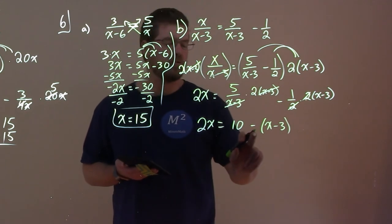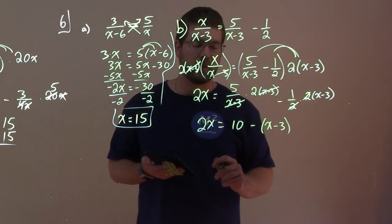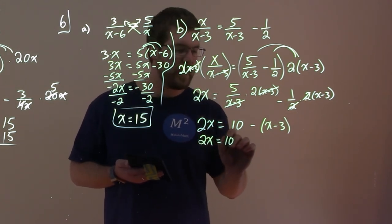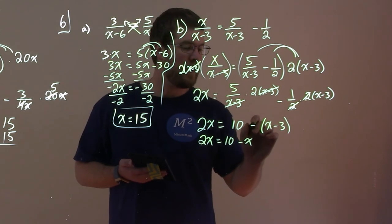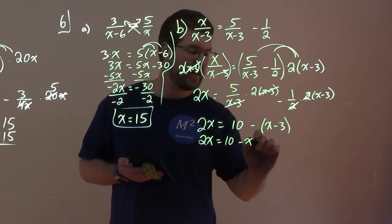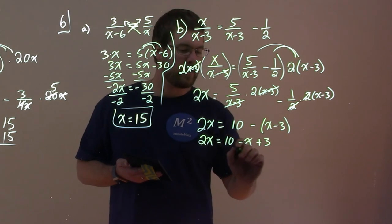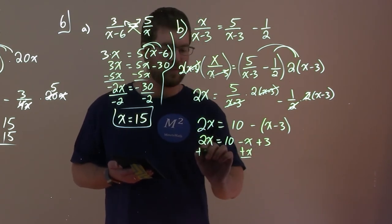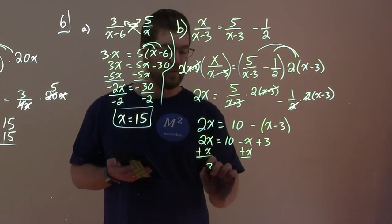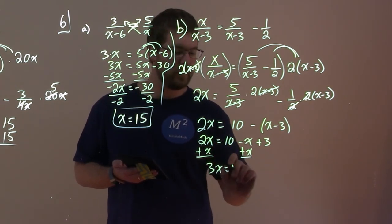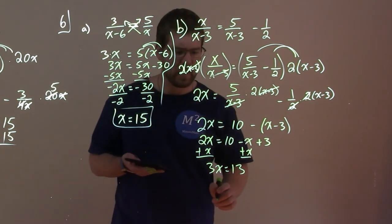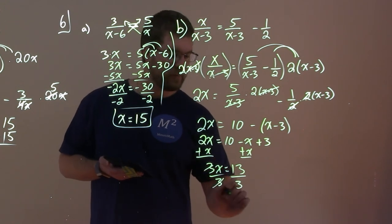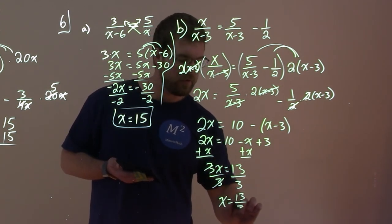Be careful with that subtraction sign — distribute it to both parts. So 2x equals 10 minus x, and the double negative on 3 makes it positive, so plus 3. Combining like terms and moving x to the left: 2x plus x is 3x, and 10 plus 3 is 13. Dividing both sides by 3: x equals 13 over 3.